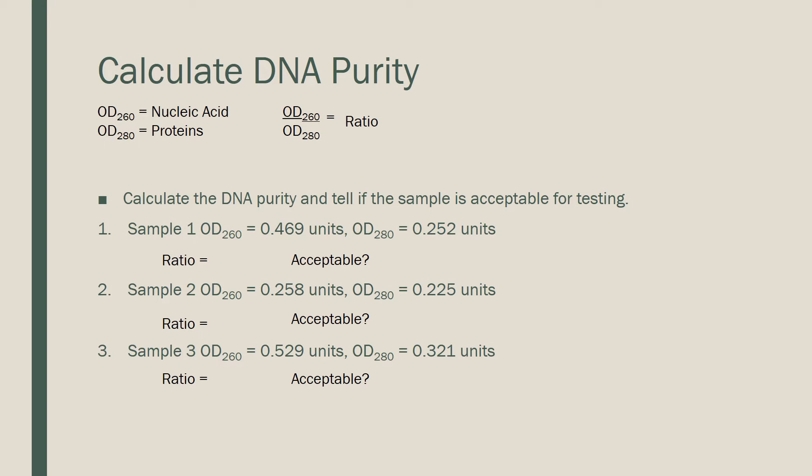Example 1: if we have a sample with an OD260 of 0.469 and an OD280 of 0.252, let's determine the ratio for this sample. We divide 0.469 by 0.252, we get 1.86. Now, is this sample acceptable? Remember we have those ranges that tell us if the purity is acceptable and for what testing. If it is 1.8 to 2.0, it is acceptable for all testing. So yes is the answer.